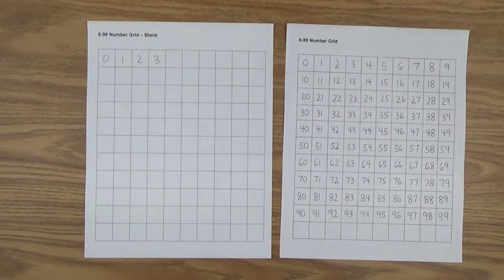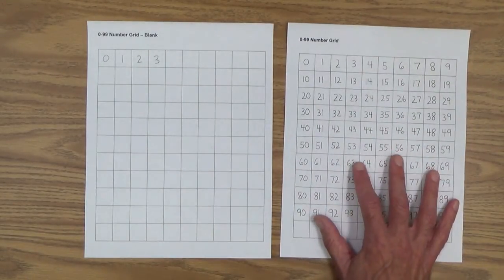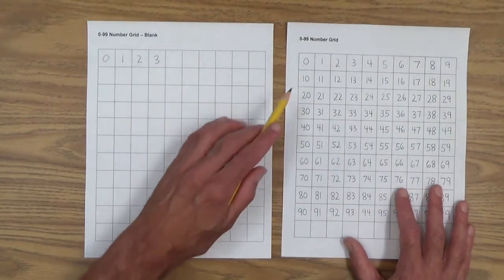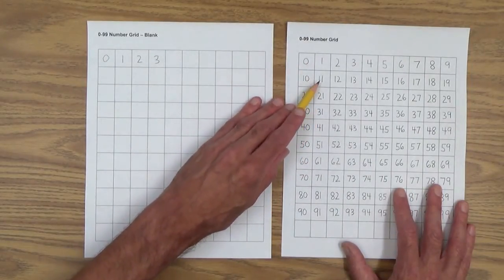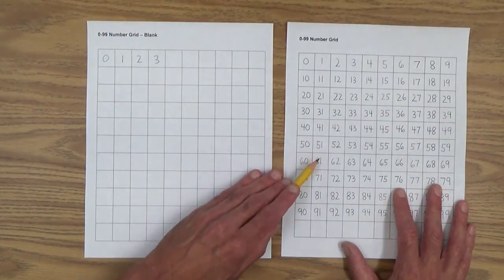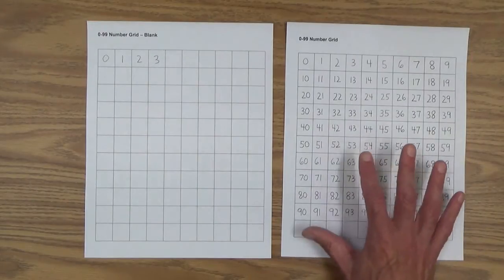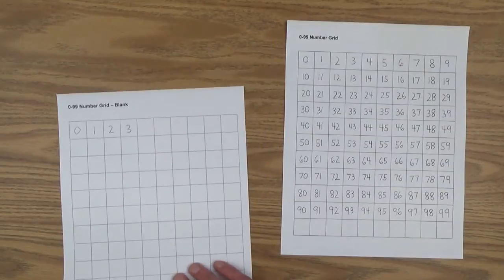And the next step will be, once your child is pretty good at that, have her copy the 0 to 99 number grids by columns. And you might say, why should I do this? Well, it really reinforces what's going on here on the number grid. He will be able to see that as he goes down, the numbers will increase by 10. And that's a powerful thing that will help him to become a master of this number grid.